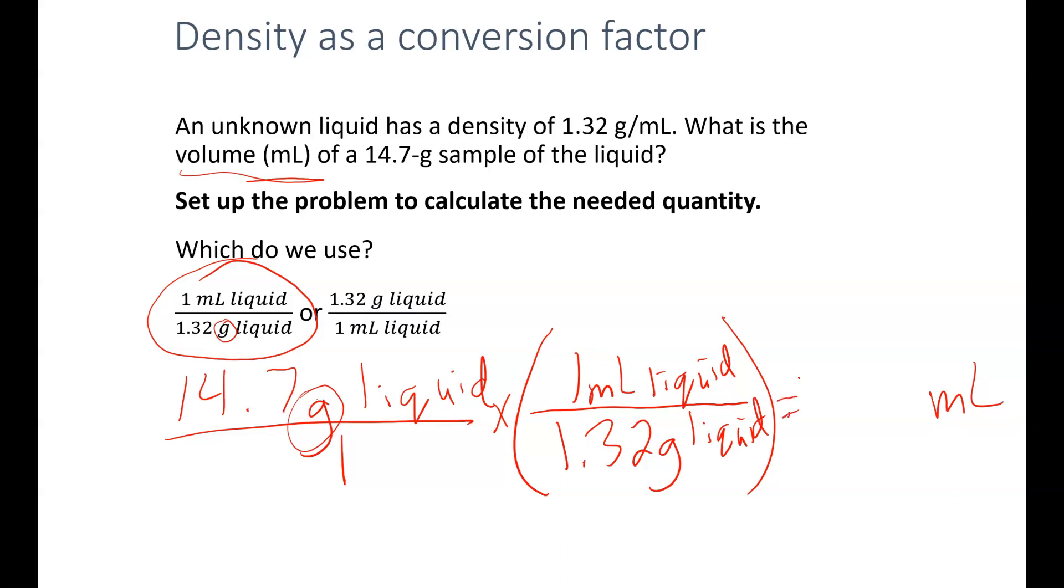When we calculate this out on our calculator, we get 11.136363. And it keeps going. We don't want to include all that. Remember we still have to worry about significant figures. Our initial value 14.7 has one, two, three significant figures. 1.32 also has one, two, three significant figures. So our final answer is going to be rounded to one, two, three significant figures. So I have 11.1 milliliters here.